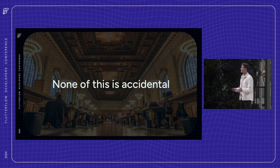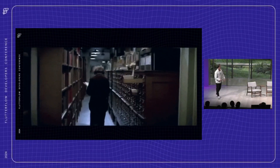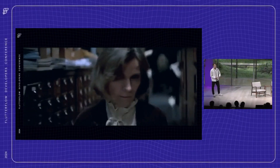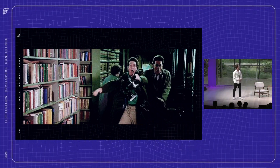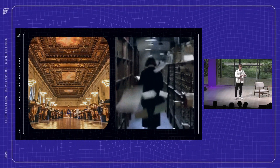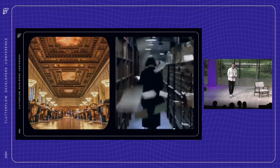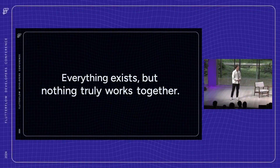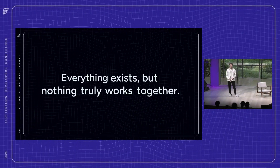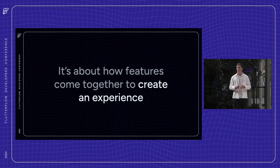But now let's imagine a very different library — one where there's books, but they're scattered, the shelves are disorganized, the lighting is poor. It's overwhelming to users. This is the difference between great product design and poor product design. In a well-designed library, everything is intentional and serves a purpose. But in the chaotic one, everything exists, but nothing truly works together. Just like in product design, the experience isn't about having features for the sake of having them — it's about how those features come together to create a seamless and cohesive experience.